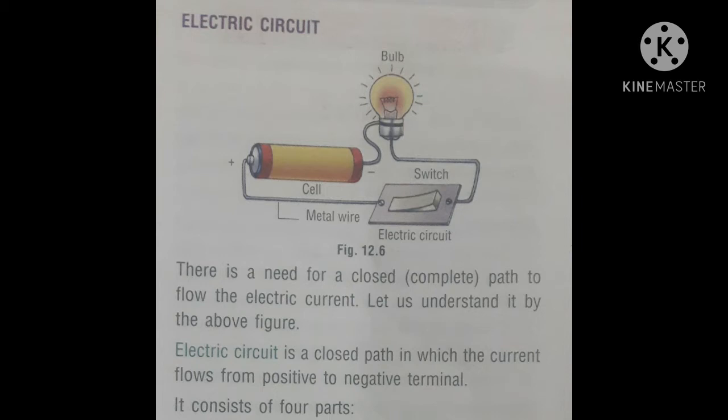Children, you are seeing figure 12.6 in which a cell, bulb and switch are connected with the help of metal wire, and you can see the bulb is glowing. There is a need for a closed or complete path to flow the electric current. A closed or complete path means when the switch is on and the current is flowing through the circuit. An electric circuit is a closed path in which the current flows from positive to negative terminal.